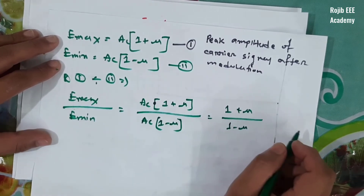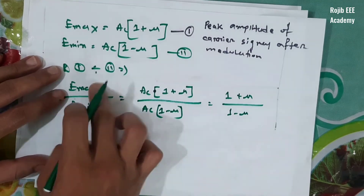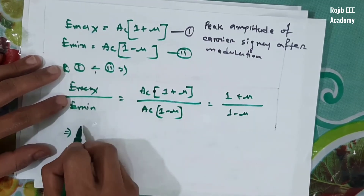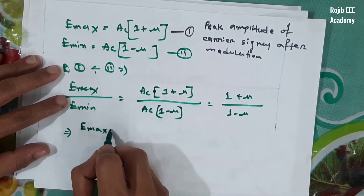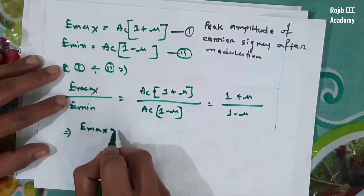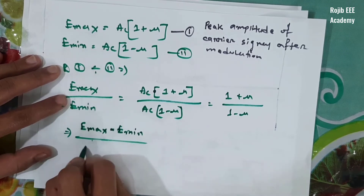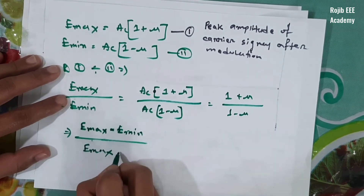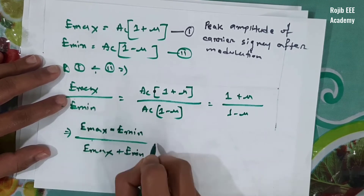Now let's see. If we compute E_maximum minus E_minimum, and E_maximum plus E_minimum, then mu equals: [E_maximum minus E_minimum] divided by [E_maximum plus E_minimum]. We have Ac cancel out, leaving 1 plus mu minus 1 equals the result.